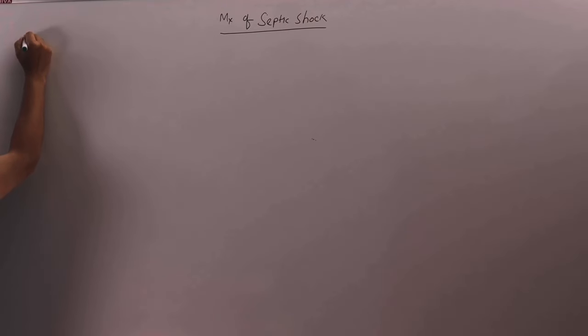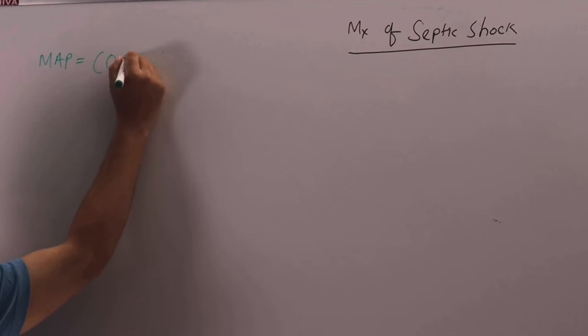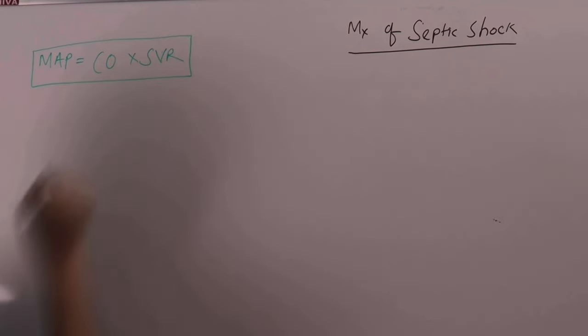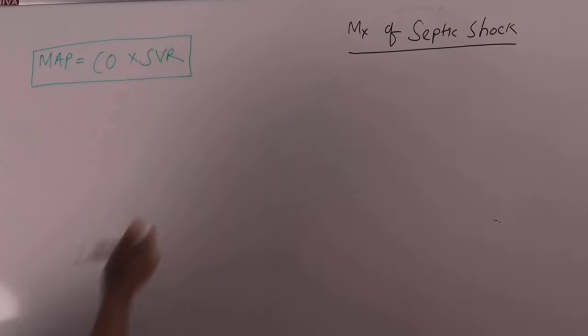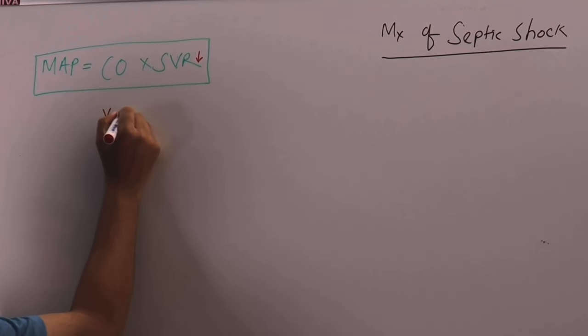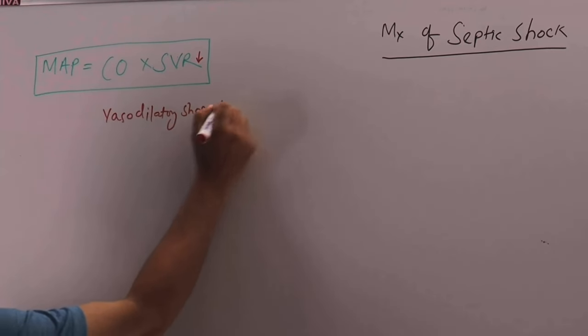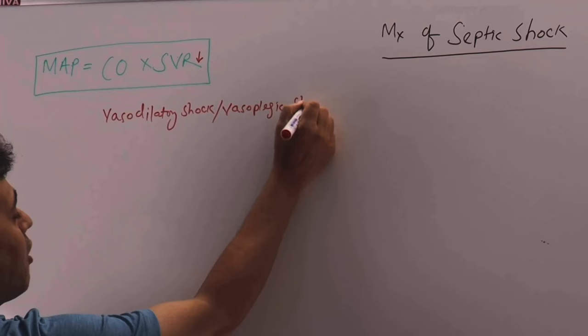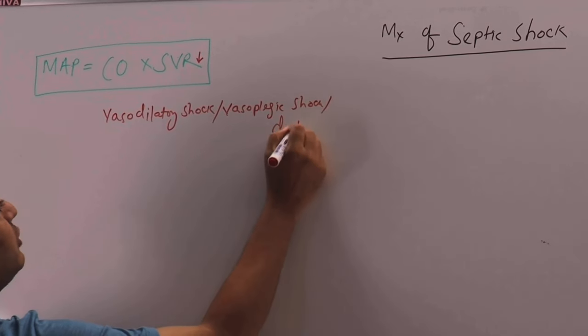The mean arterial pressure is equal to cardiac output times systemic vascular resistance. What happens in septic shock the SVR goes down. So it's basically a vasodilatory shock, a vasoplasic shock or popularly known as distributive shock.